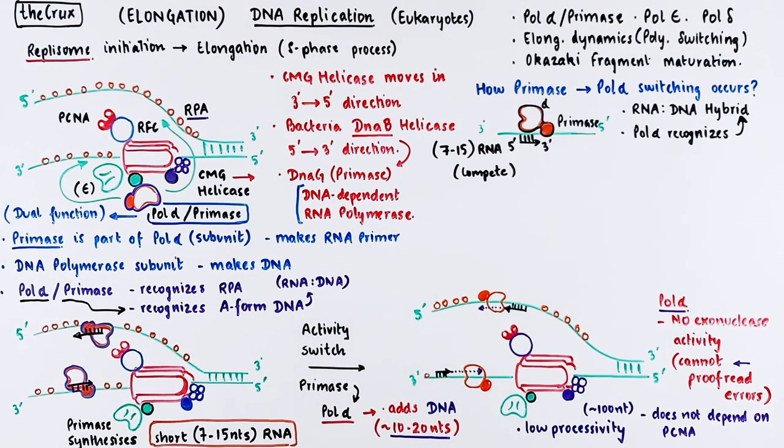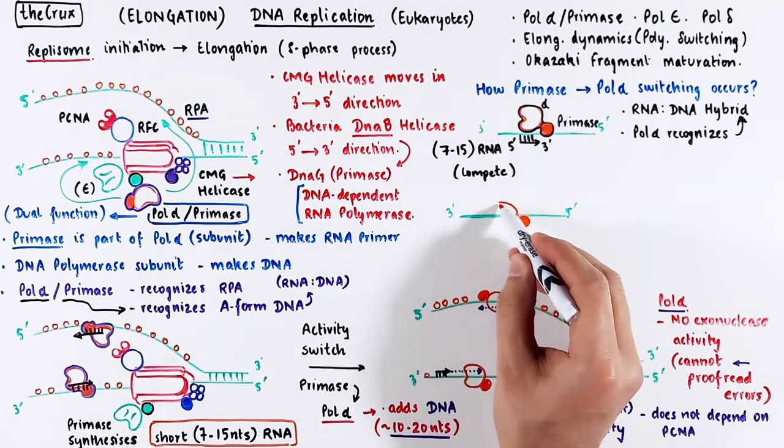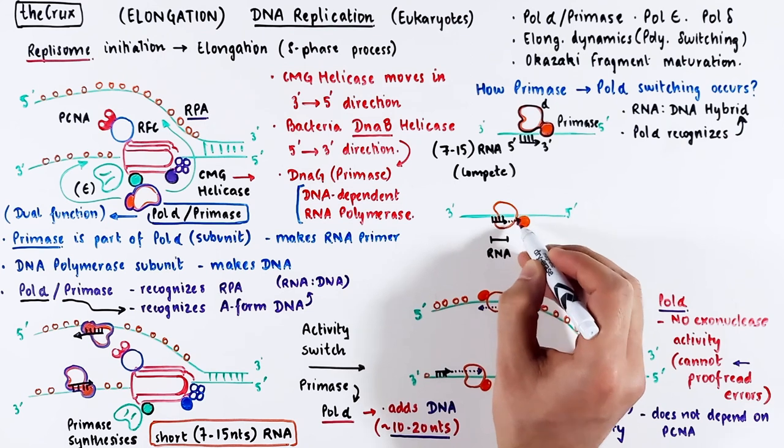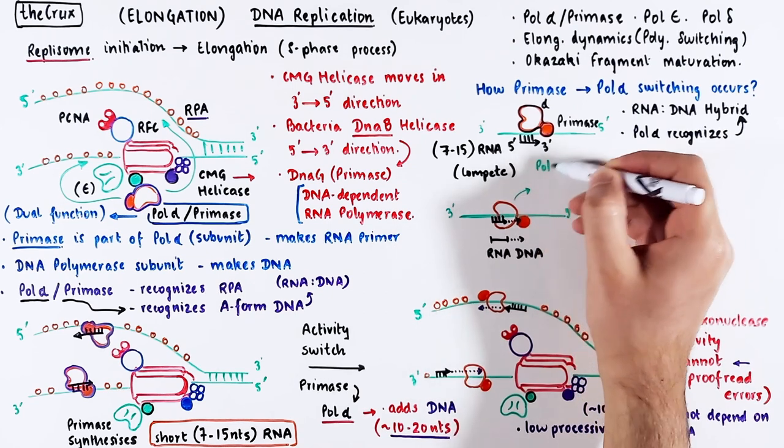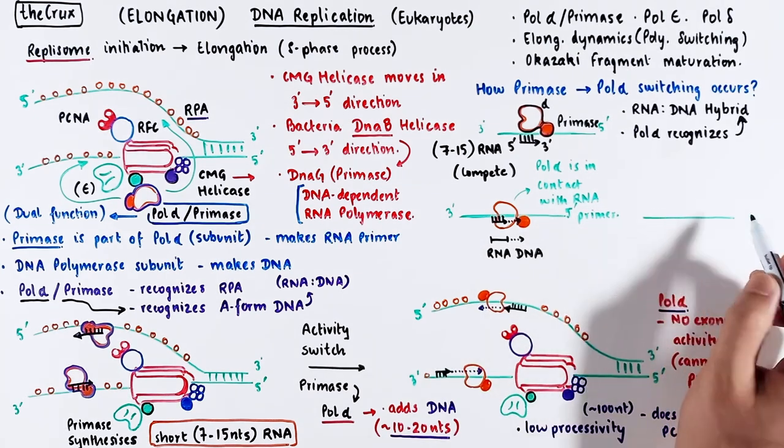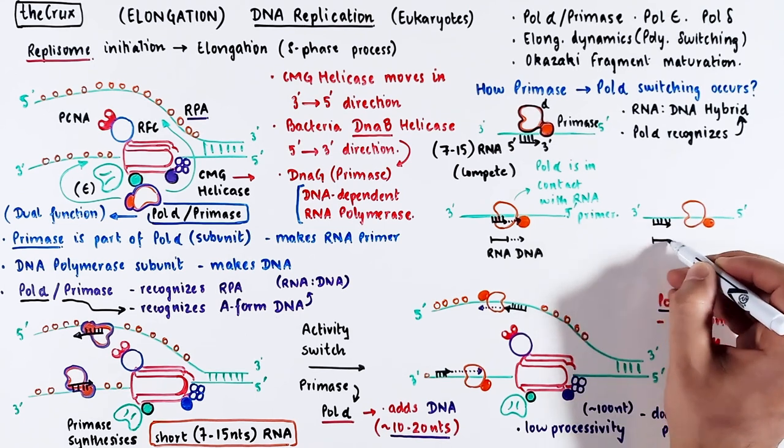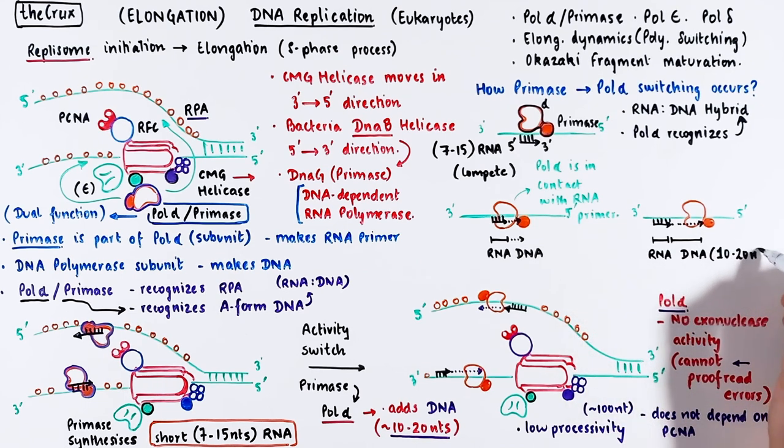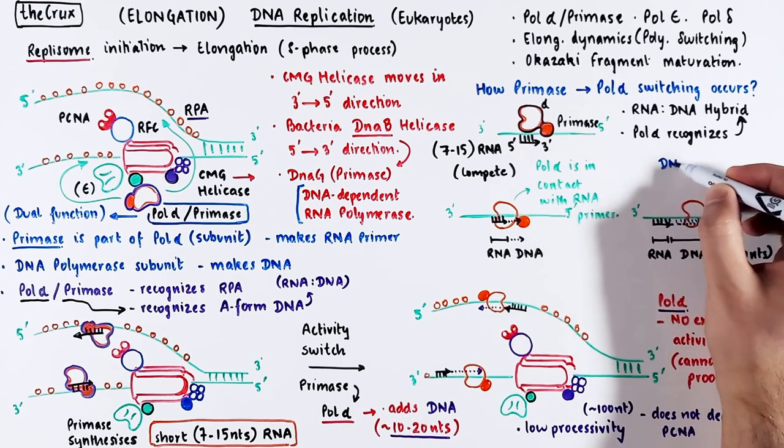Primase wants to continue making RNA, but polymerase wants to take over and make DNA instead. But eventually the DNA polymerase alpha wins and it starts making DNA from the free end of the RNA primer. At this point the polymerase alpha is in contact with the RNA-DNA duplex while it makes DNA in its active site. But as the polymerase alpha keeps making DNA, the RNA-DNA duplex moves out of the reach of the polymerase alpha. And now it starts making contact with the DNA-DNA duplex. This occurs when the DNA synthesized by pol alpha is around 10 to 20 nucleotides in length.